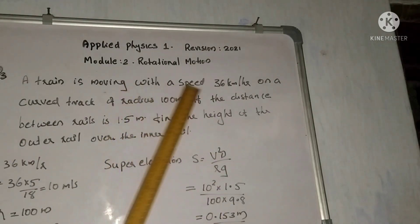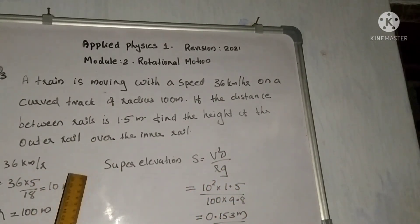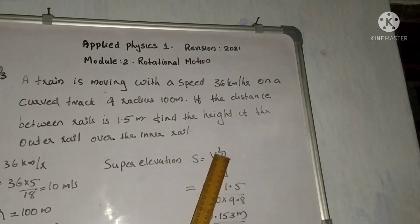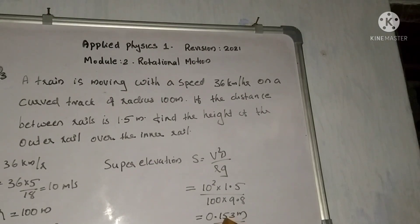Taking velocity as 36 km per hour, converting by multiplying 5 by 18 gives 10 m per second. Radius is 100 m and d is 1.5 m. Substituting: 10 squared into 1.5 divided by 100 into 9.8. The calculation gives 0.153 meters.